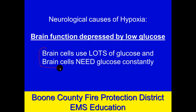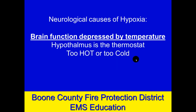A real simple concept: your brain needs lots of glucose, and it needs it all the time. A lack of sufficient glucose to the brain means brain cells can't make energy, which means they don't function well, which means they don't control the cardiovascular and respiratory systems well — and that can lead to hypoxia.